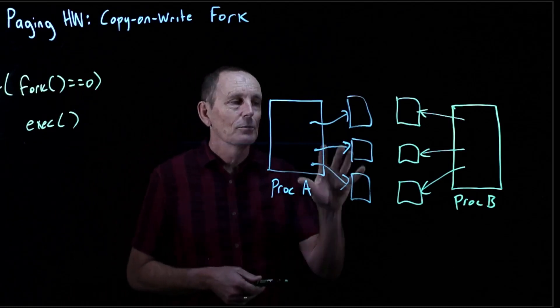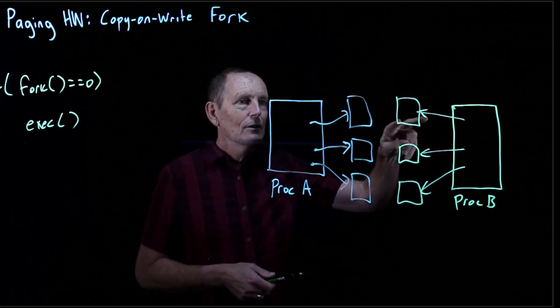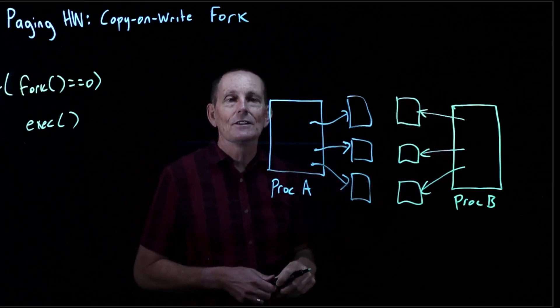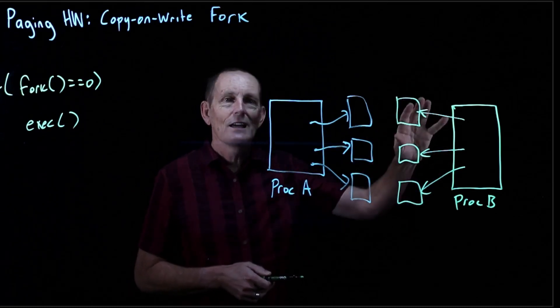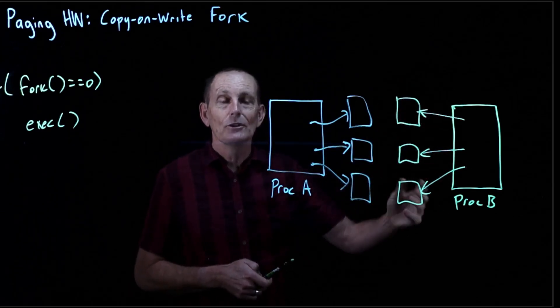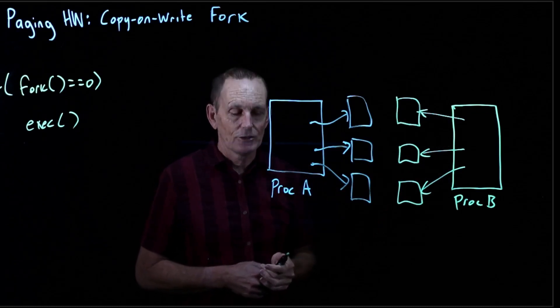What happens on the exec? So process A is the parent process. It's doing its thing. Process B creates all these pages, and then all of a sudden does an exec. What does an exec do? Exec basically replaces the address space with new pages from an ELF file, from the executable.